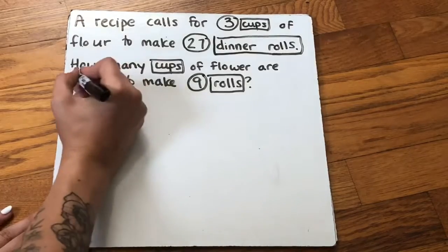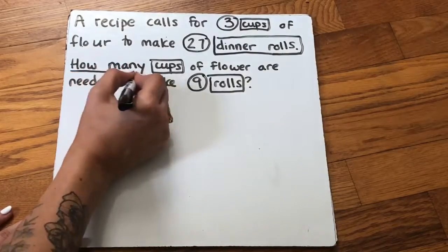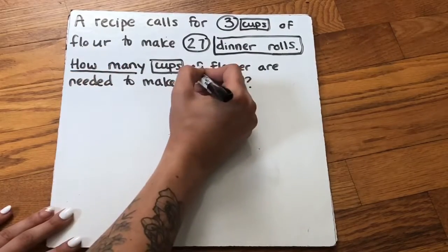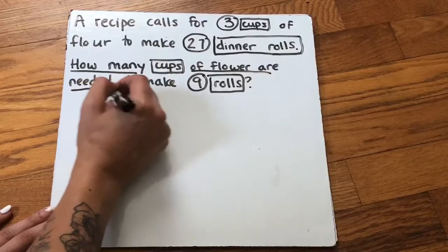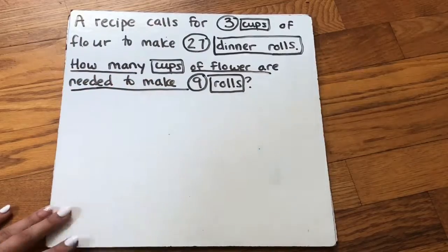My last step for annotations is underlining my question: how many cups of flour are needed to make nine rolls?